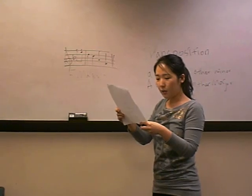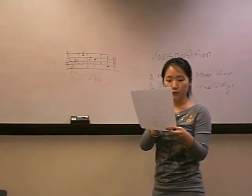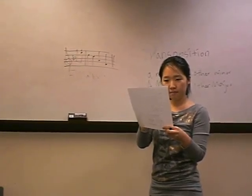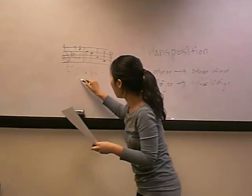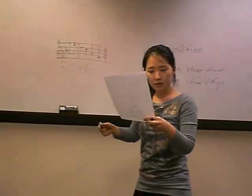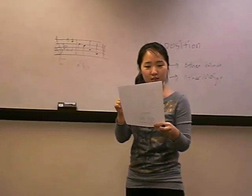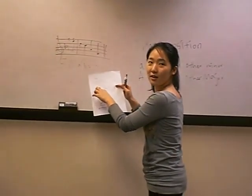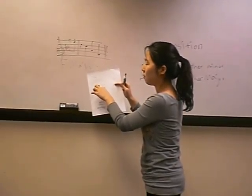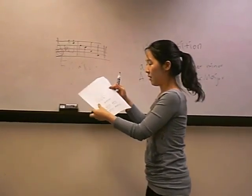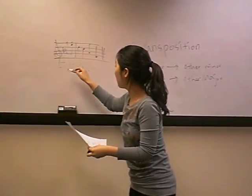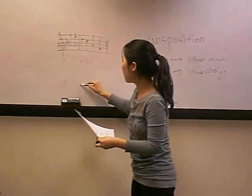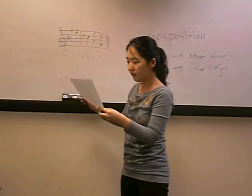So I want to move to two flats. What is the key? B flat major. I want to transpose to B flat major — two flats. Okay, here is two flats. What is it? B flat major. So I want to transpose F major to B flat major. How can I make it B flat major?